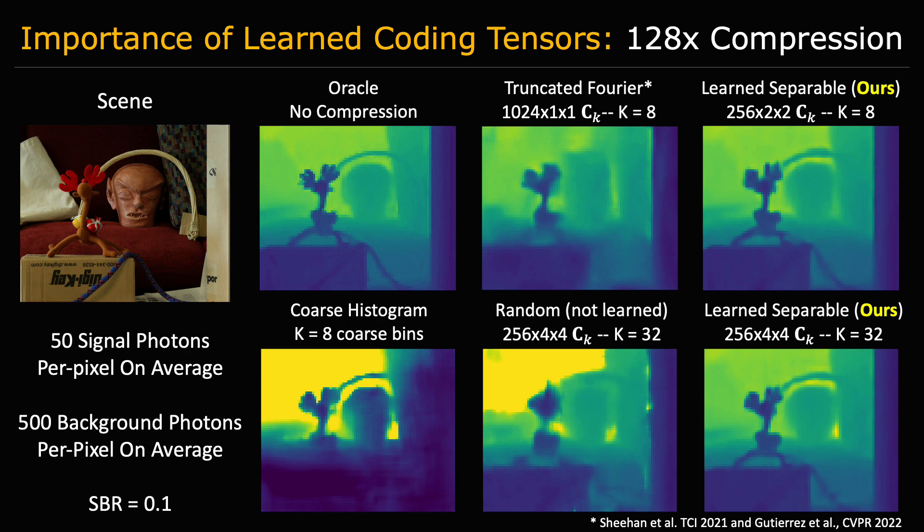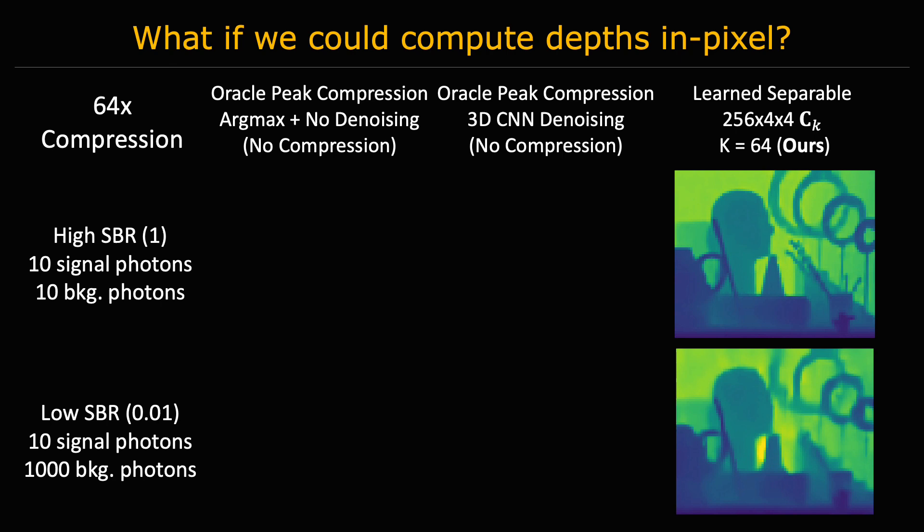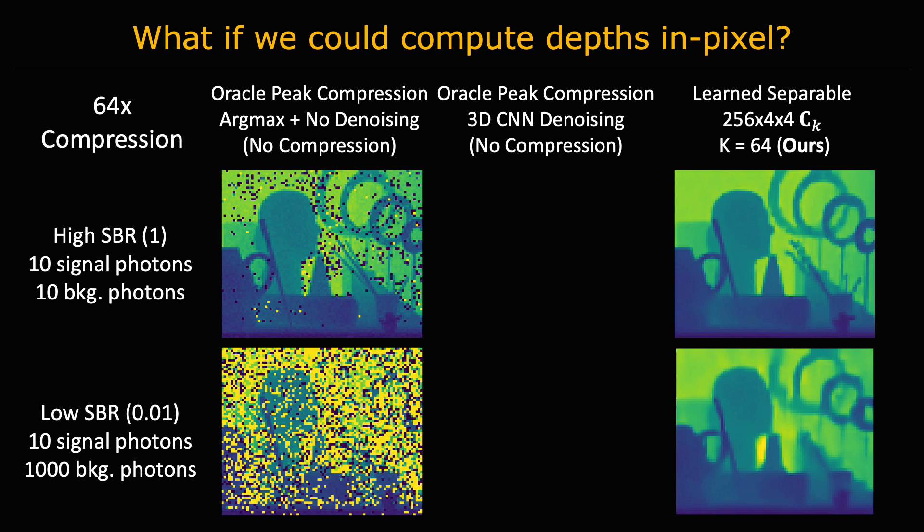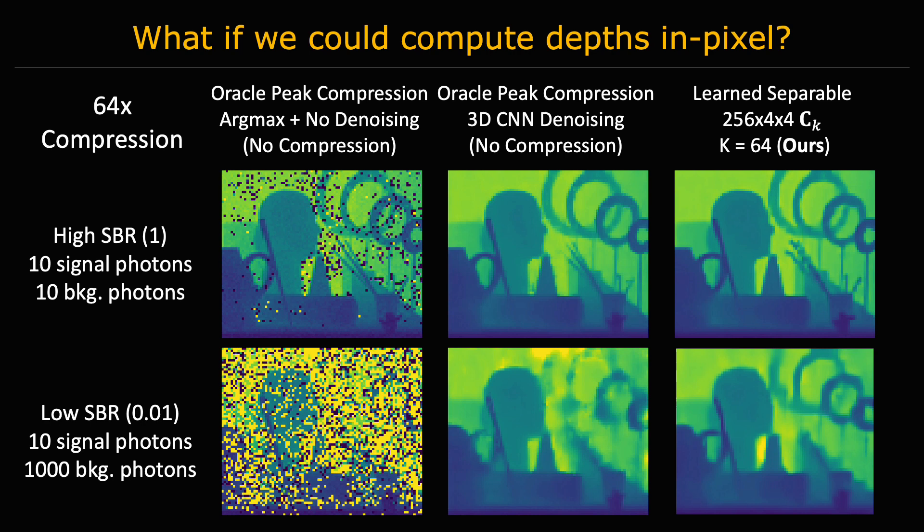Next, one may wonder what if we could compute depths in pixel. With sufficient in-pixel memory, this could be done by taking the argmax along the time axis. Denoising these depth maps results in the following reconstruction. Although this approach can help reduce data rates, it requires more in-sensor memory than a compressive histogram. Moreover, at low signal-to-background ratio (SBR), compressive histograms can still provide benefits over this approach.